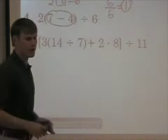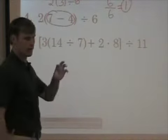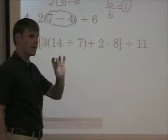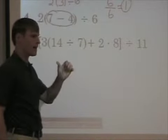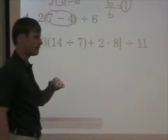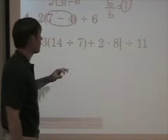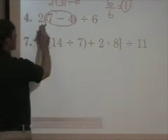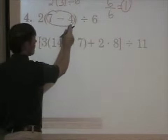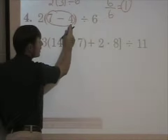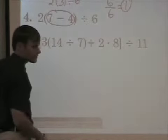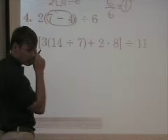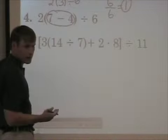So if you follow your order of operations — parentheses, exponents, multiply, divide, add, subtract — you'll get one. Now, what if I didn't do it that way? What if I did two times seven is fourteen, minus four is ten? Ten divided by six isn't one. So you see why it's important to do it in the correct order.